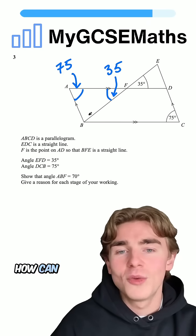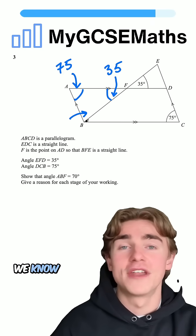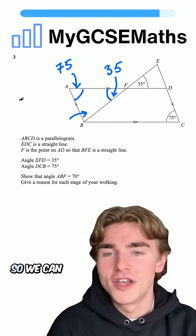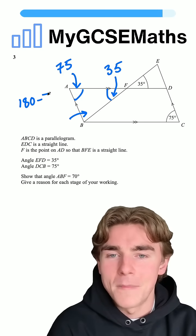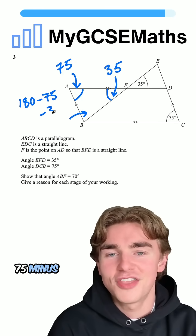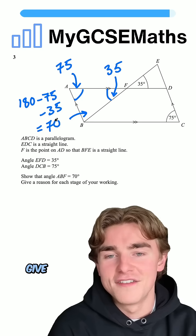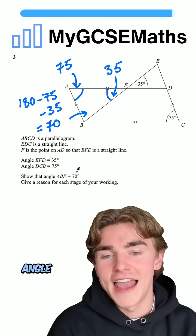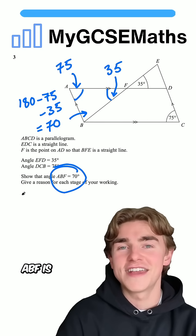Finally, we can work out this angle. We know that angles in a triangle add up to 180. So we can do 180 minus 75 minus 35, which gives us 70, showing that angle ABF is 70 degrees.